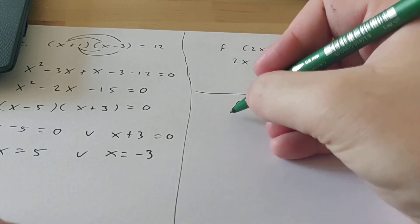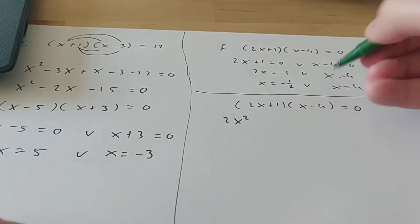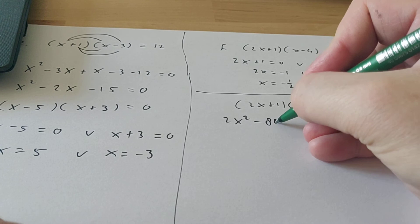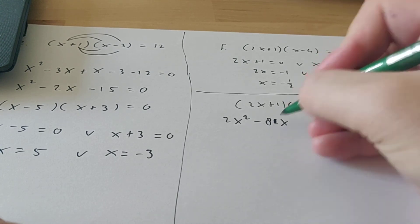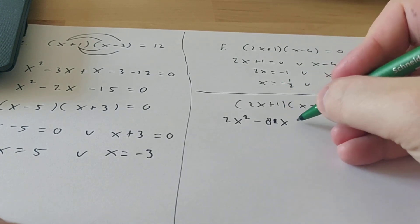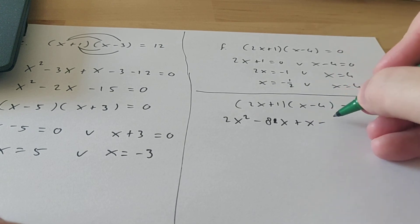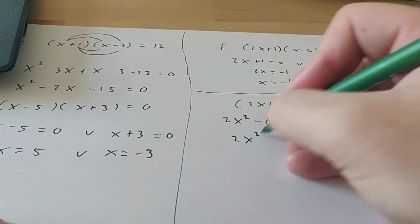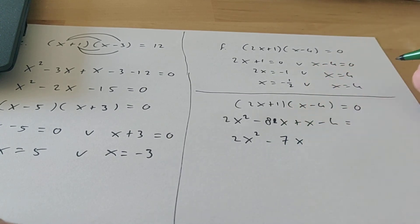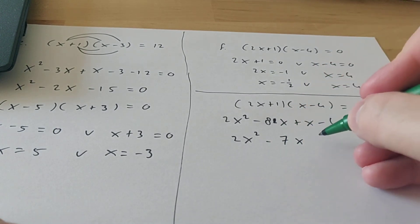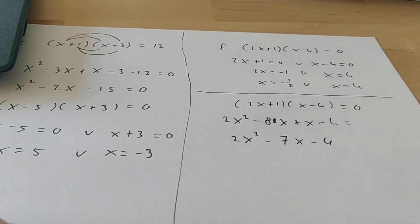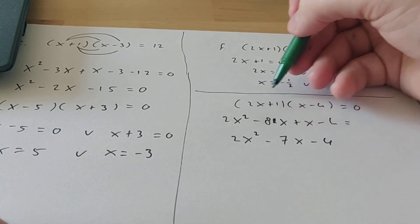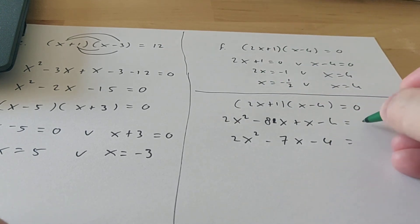You get 2x times x is 2x squared. 2x times minus 4 is minus 8x. And then 1 times x is just x. And 1 times 4 is minus 4. So when we factorize this a little bit, we get 2x squared minus 7x minus 4, and this equals 0.